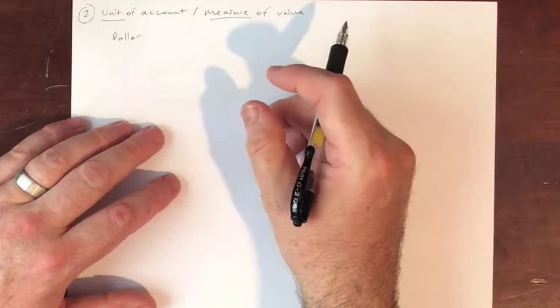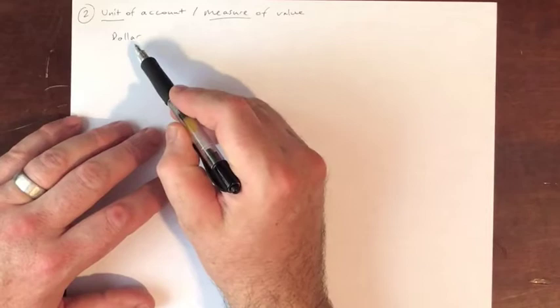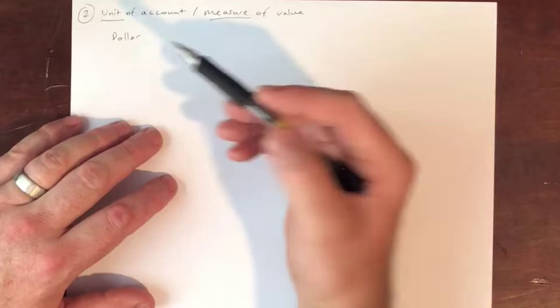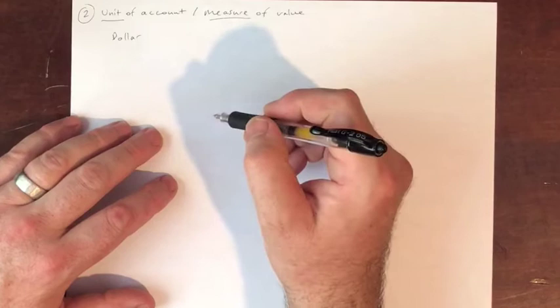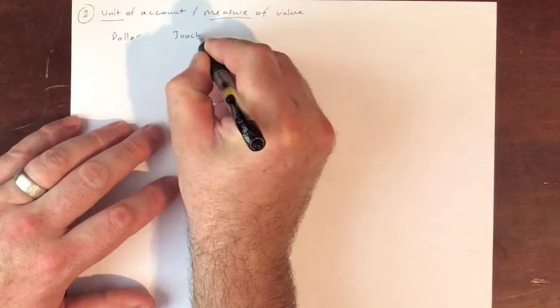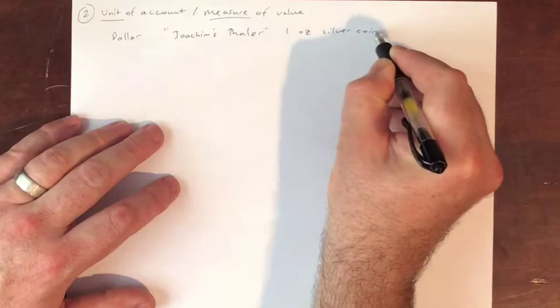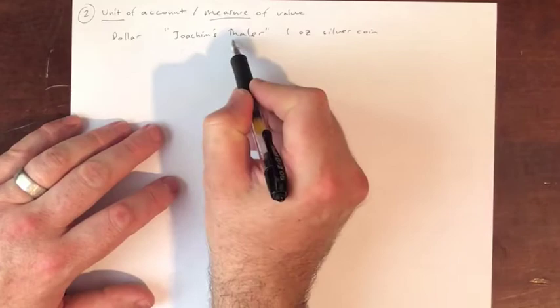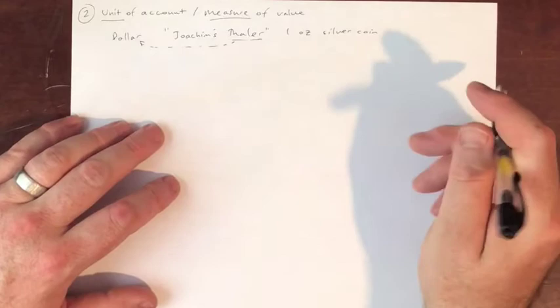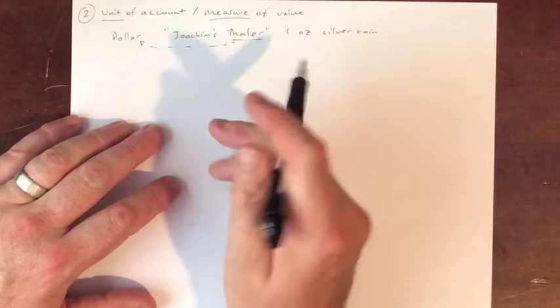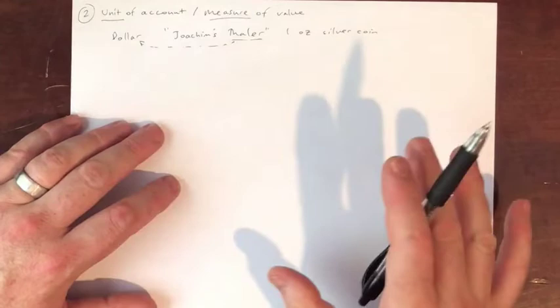The word 'dollar' is interesting because it has been severed from its historical meaning. It doesn't actually convey anything anymore. The word probably comes from 'thaler' — a term for a one-ounce silver coin from that region. Etymologically, thaler probably turned into dollar. Currently, our unit of account has been very much severed from any particular historical meaning.